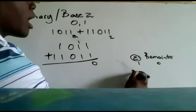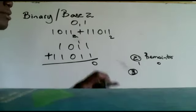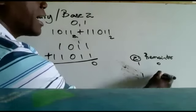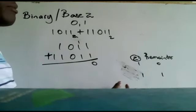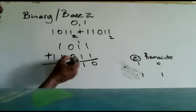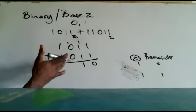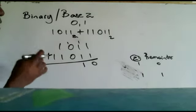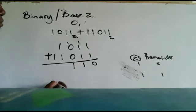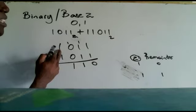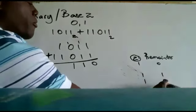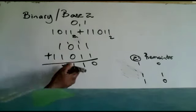Now let's check the next column: 1 plus 1 plus 1 plus 1 is 4 — wait, more precisely we have 1 plus 1 plus 1, that's 3. How many sets of two can we get out of 3? One set of two with a remainder of 1, because 2 goes into 3 once with remainder 1. We write 1 in that column and carry the set of two. Then 0 plus 0 plus 1 is 1 — we write 1. Then 1 plus 1 is 2: one set of two, no remainder — write 0 and carry.